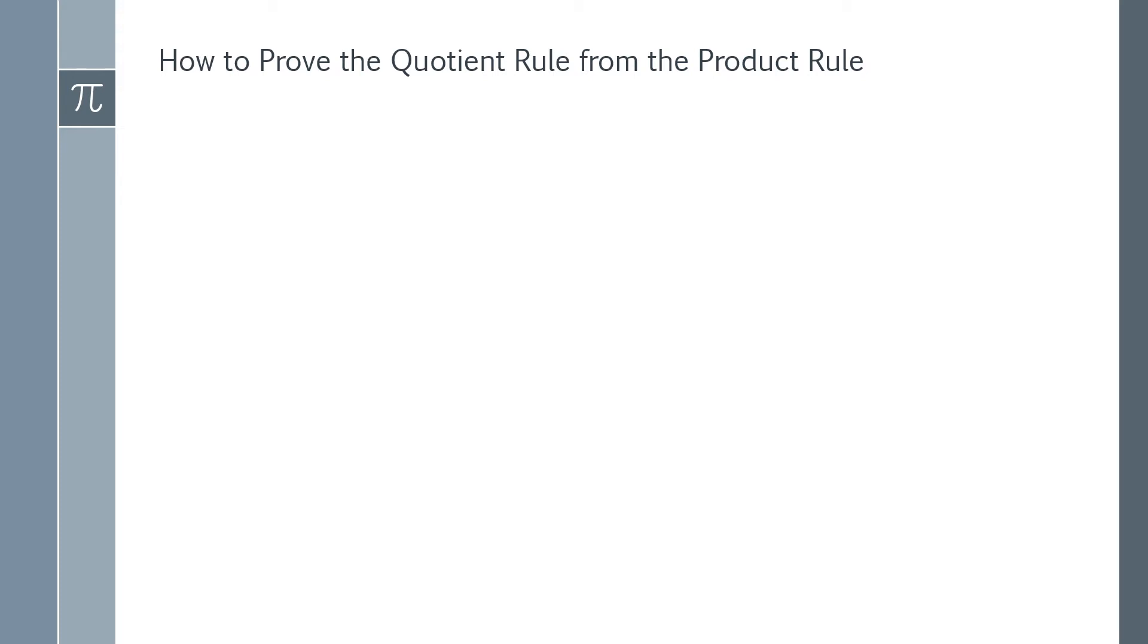In this video I'm going to show you a simple and easy way to prove the quotient rule using just the product rule. Obviously we're going to assume that the product rule is true because we're deriving the quotient rule from the product rule.